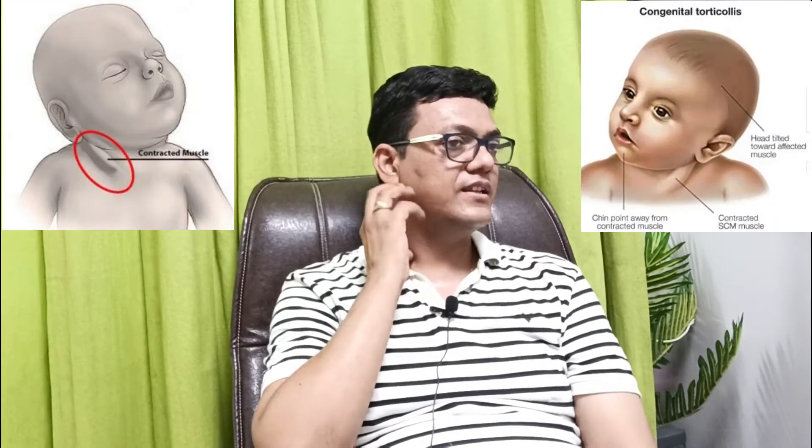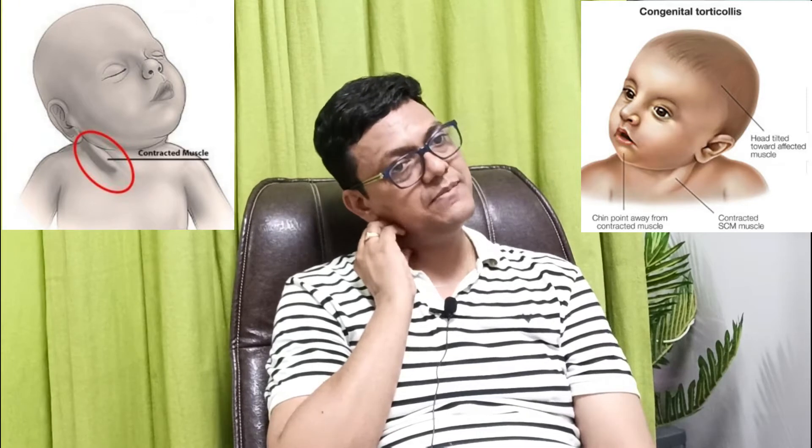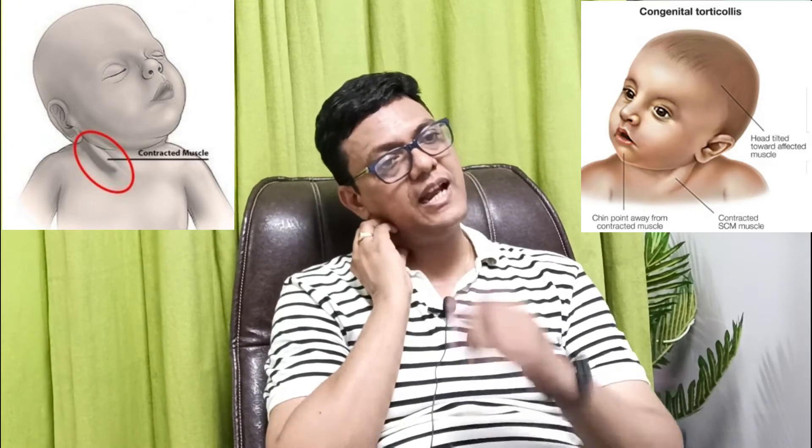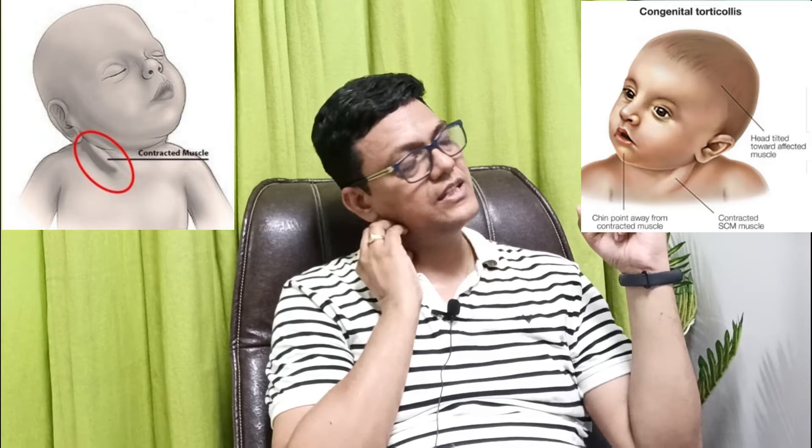This condition is basically due to a problem in the sternocleidomastoid muscle. If this sternocleidomastoid muscle is contracted, it shortens in length. The head will tilt to the same side where the muscle is contracted, and the chin will go in the opposite direction, with some rotation as well. So this is a combined deformity of tilt and rotation.